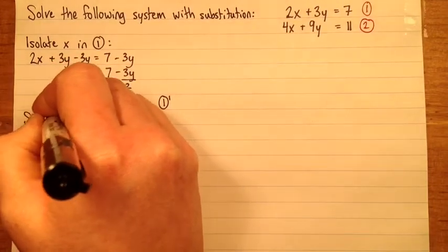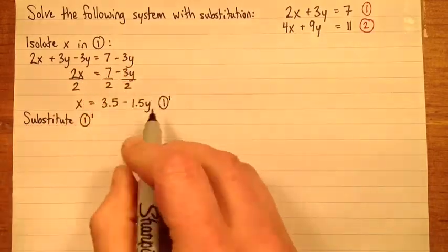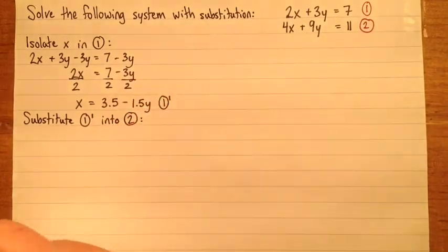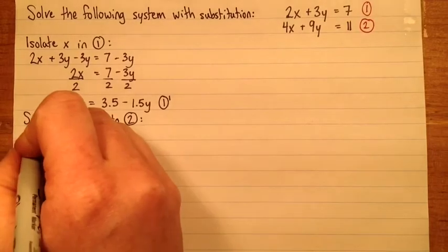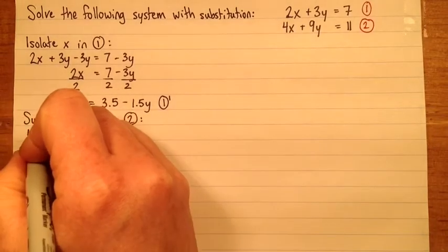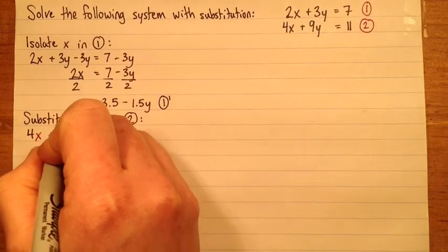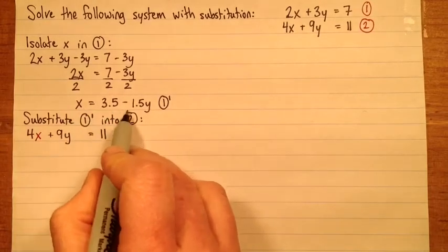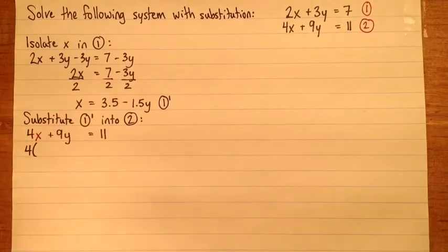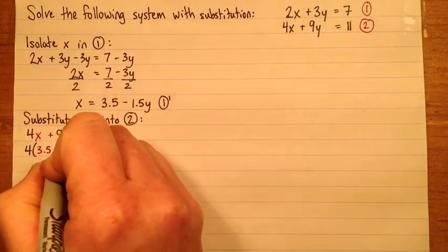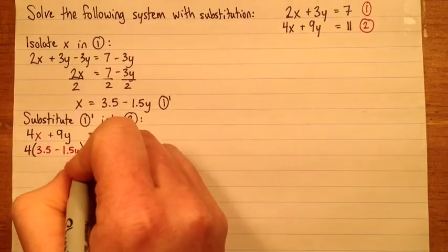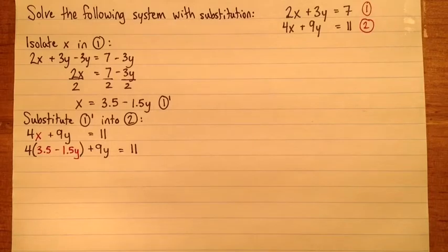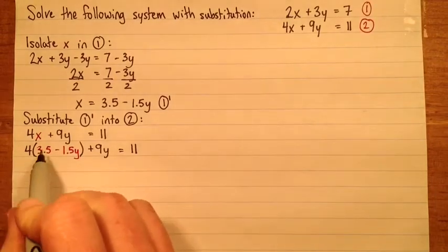Now I want to substitute. I'm going to substitute 1 prime, and I have to substitute it into the other equation, so into 2. Equation 2 is 4x plus 9y equals 11. And so equation 1 prime tells me that x equals 3.5 minus 1.5y. So it's 4 times that: 3.5 minus 1.5y plus 9y equals 11. There we go. That's the key idea right there. Because now I've got this equation with only x's in it. So I'll just kind of simplify it carefully here.